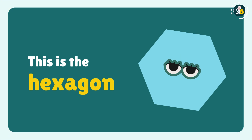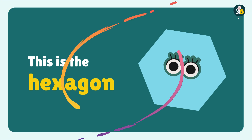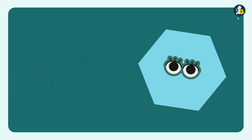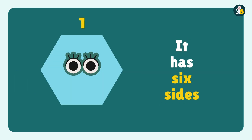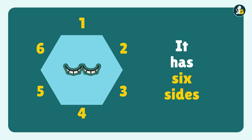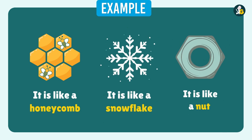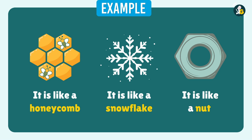This is Hexagon. A hexagon has six sides: one, two, three, four, five, six. For example, like a honeycomb, like a snowflake, and like a nut. These all have hexagon shapes.